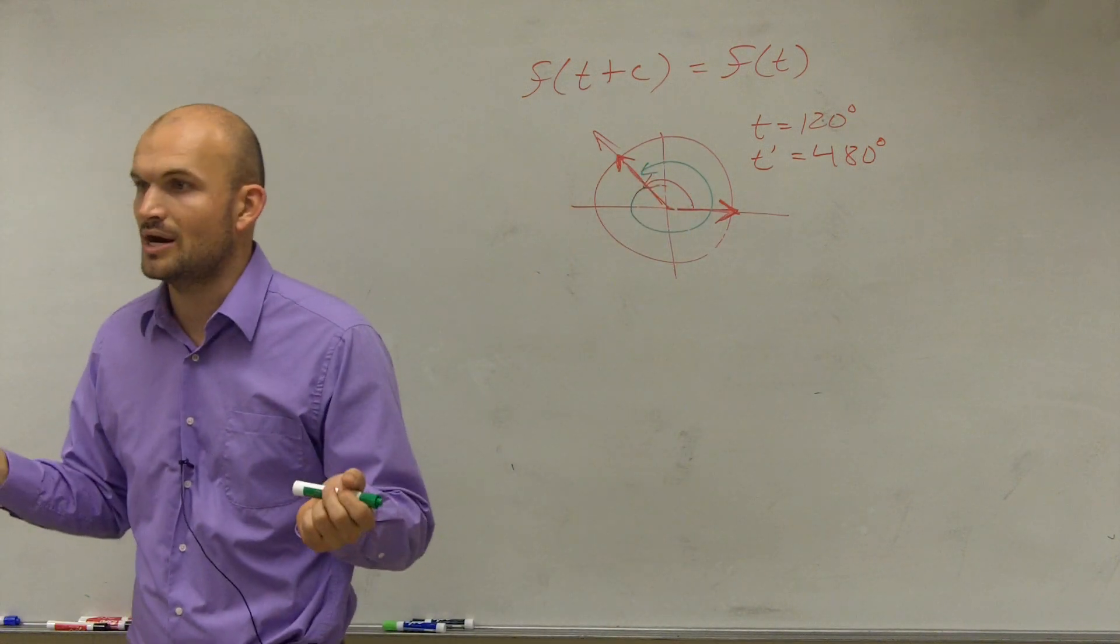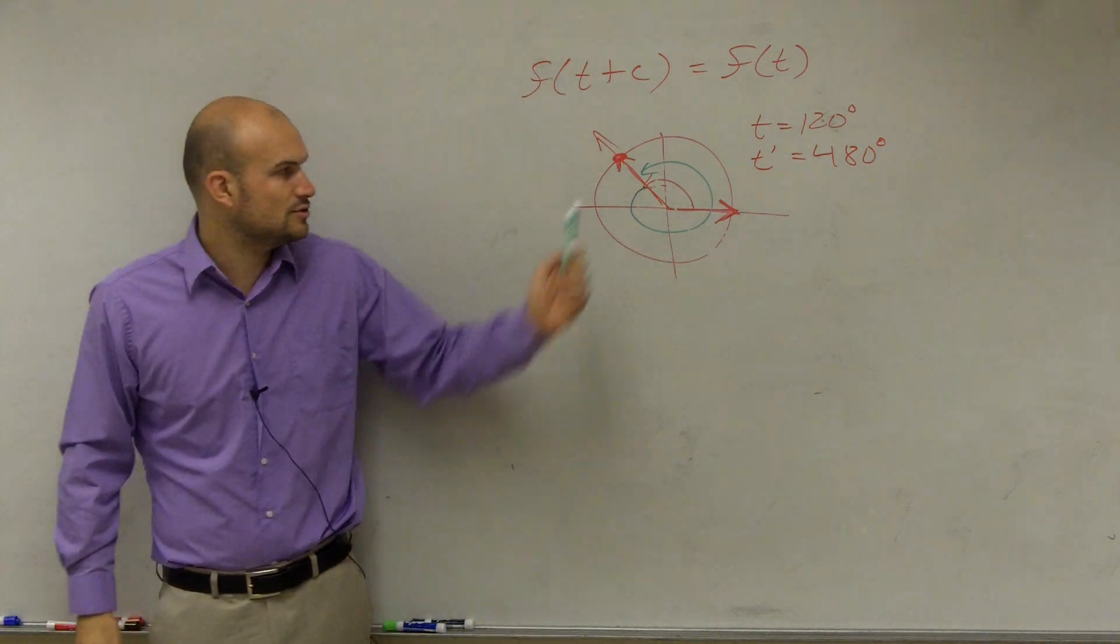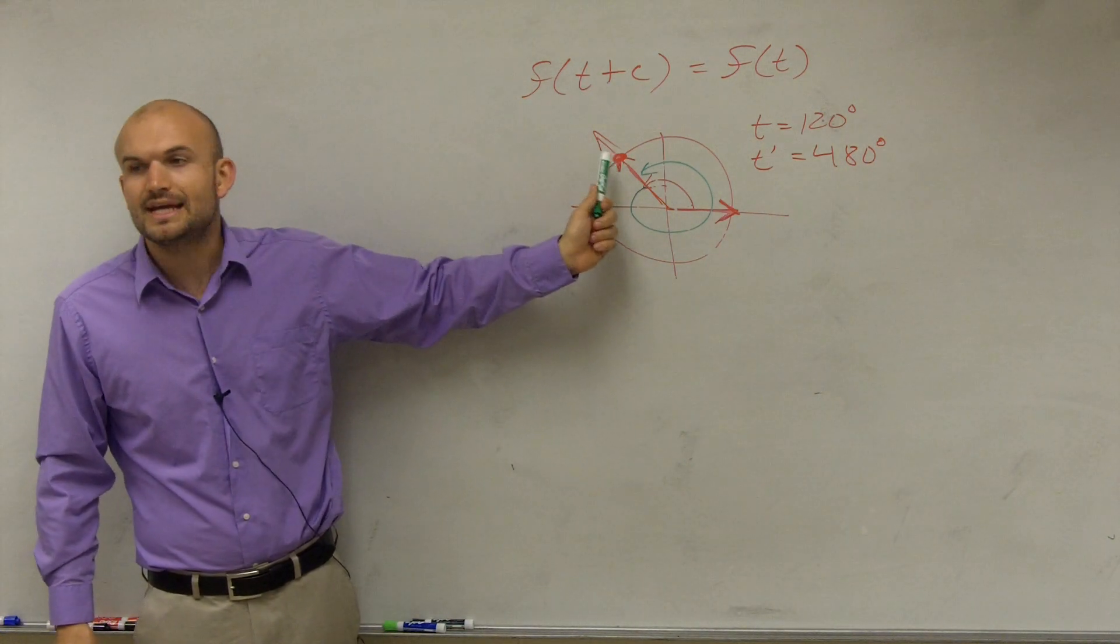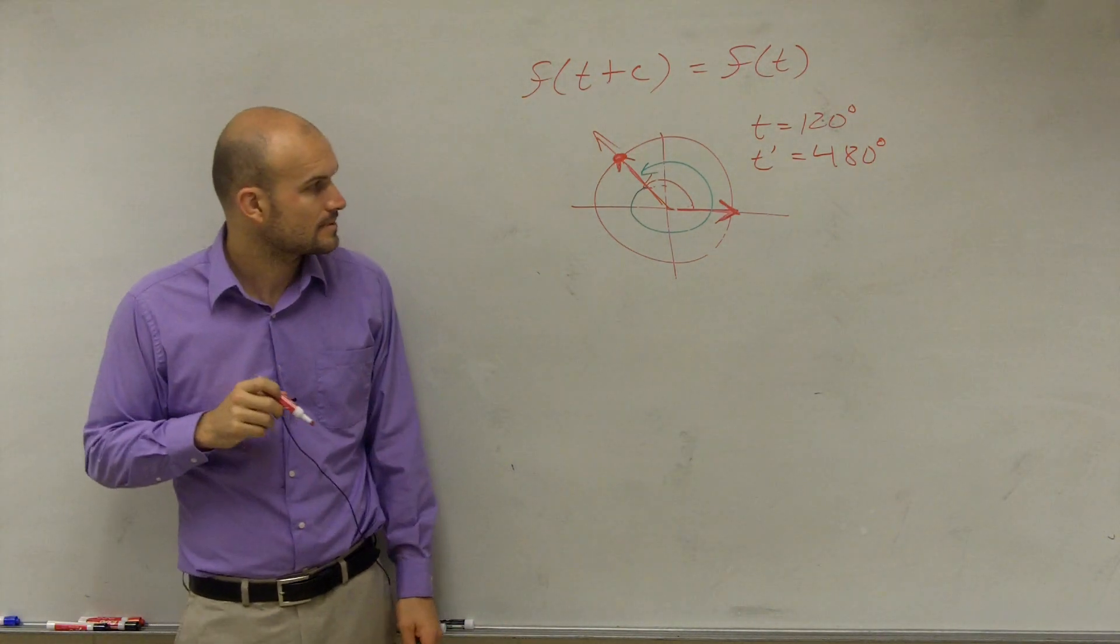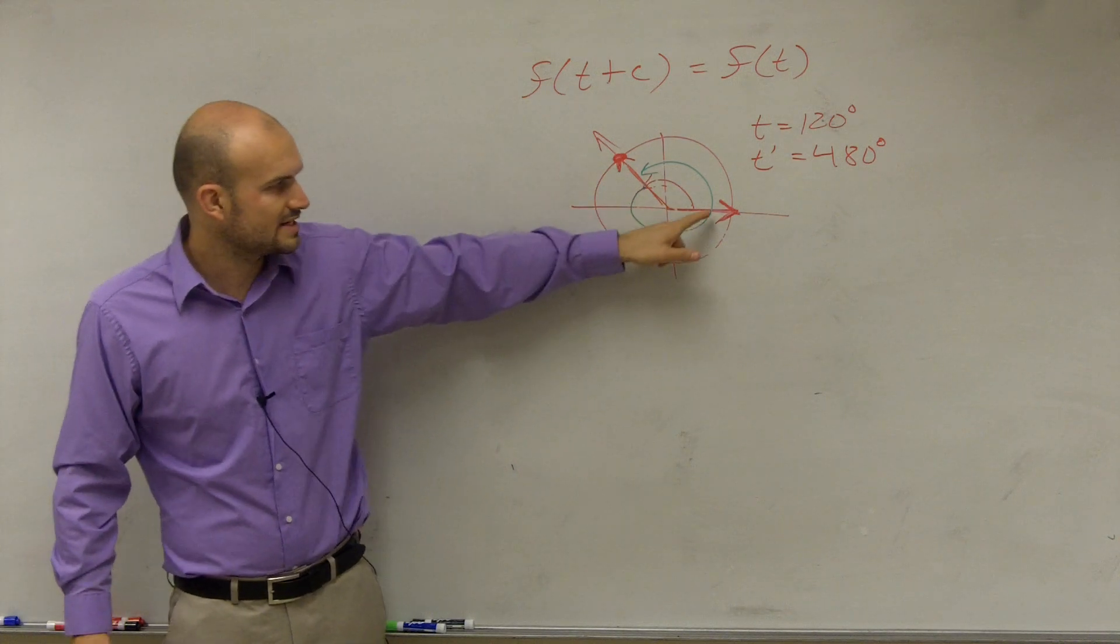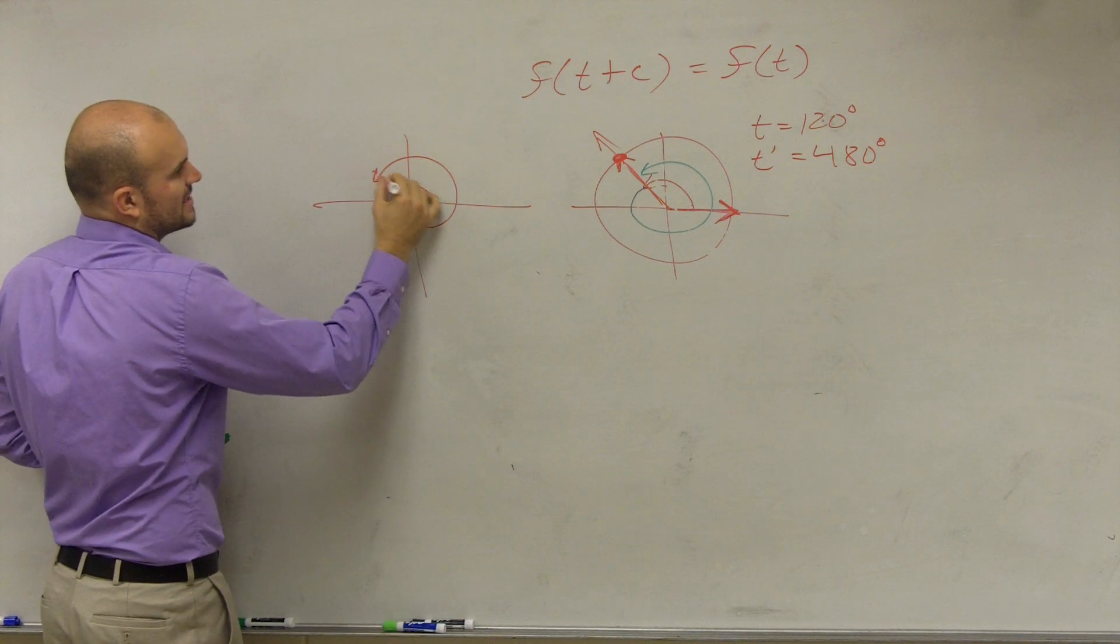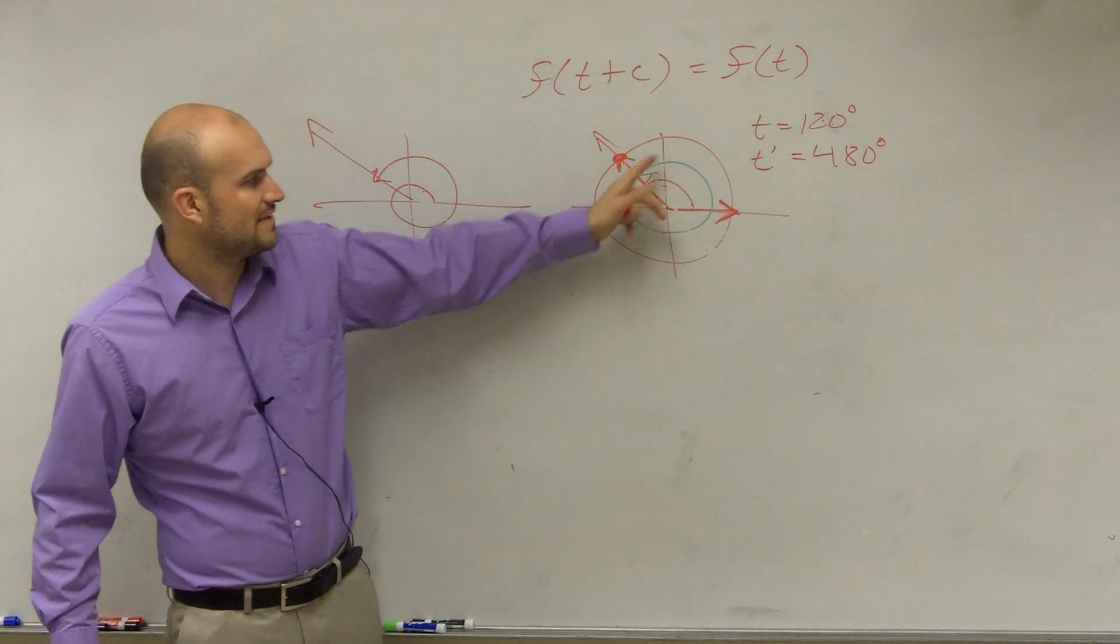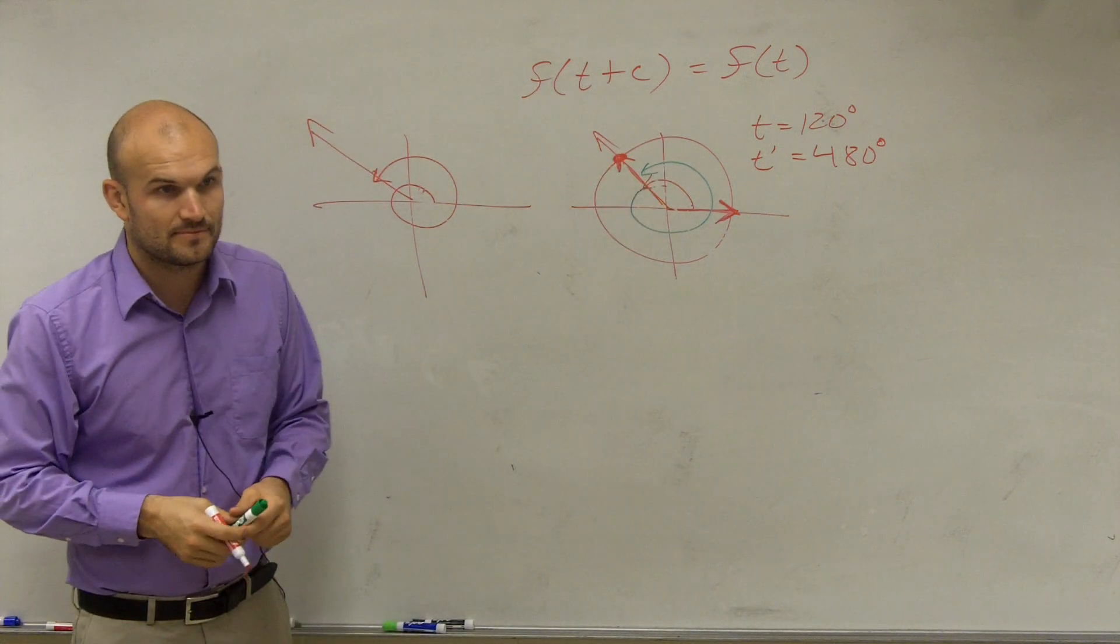On the unit circle, since these are coterminal angles, do they intersect at the same point? Yes, because they have the same initial and terminal side, they intersect at the same point on the unit circle. If I did 480 degrees, I'd go 360 and then continue. I just did it with different colors. This point is exactly the same, right?